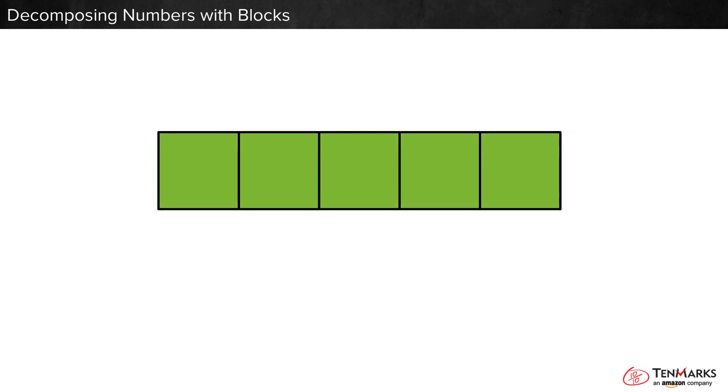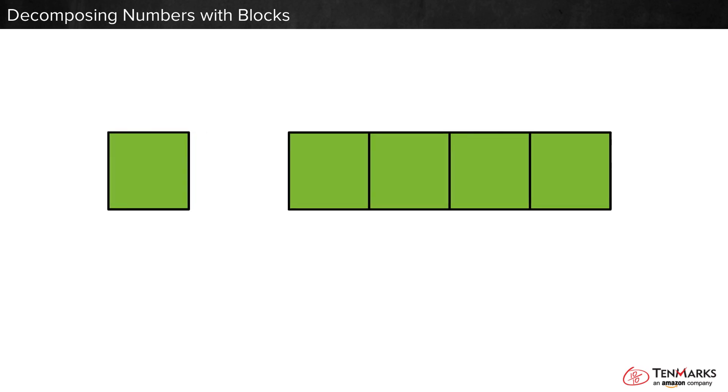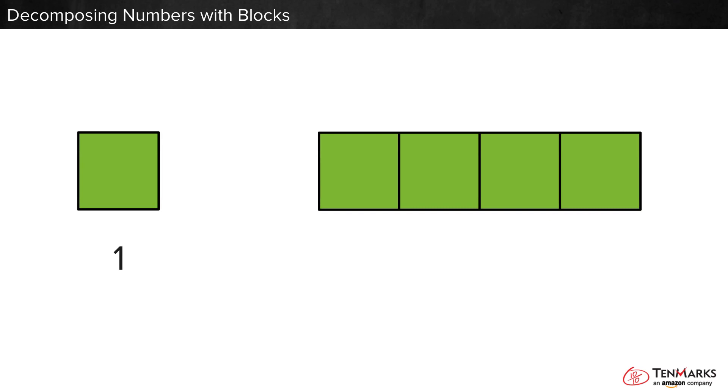Break five apart in a different way. This piece has one block. How many blocks does the other piece have? Four. Four blocks. Four and one make five.